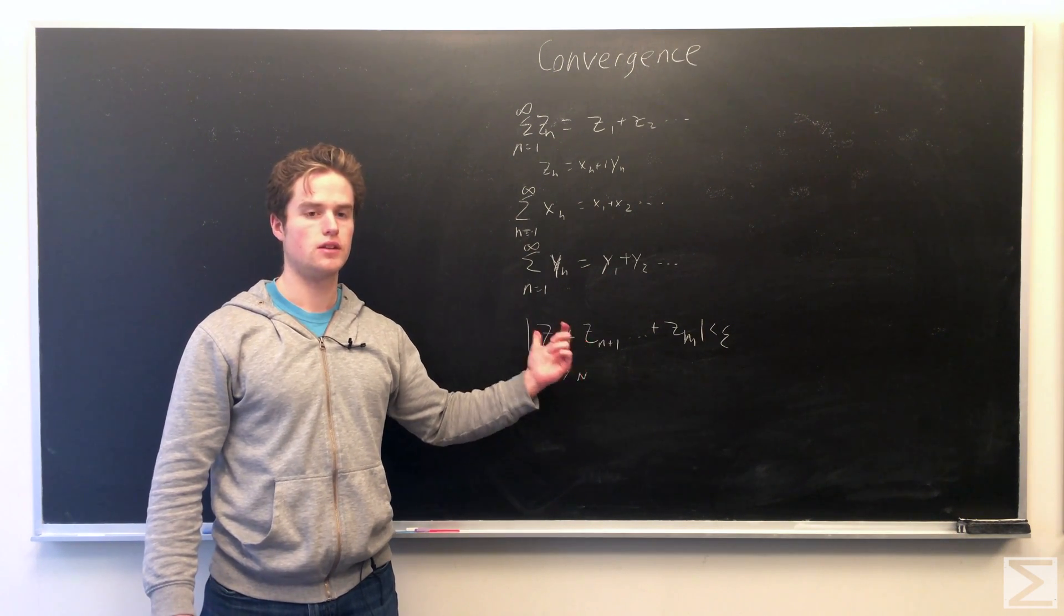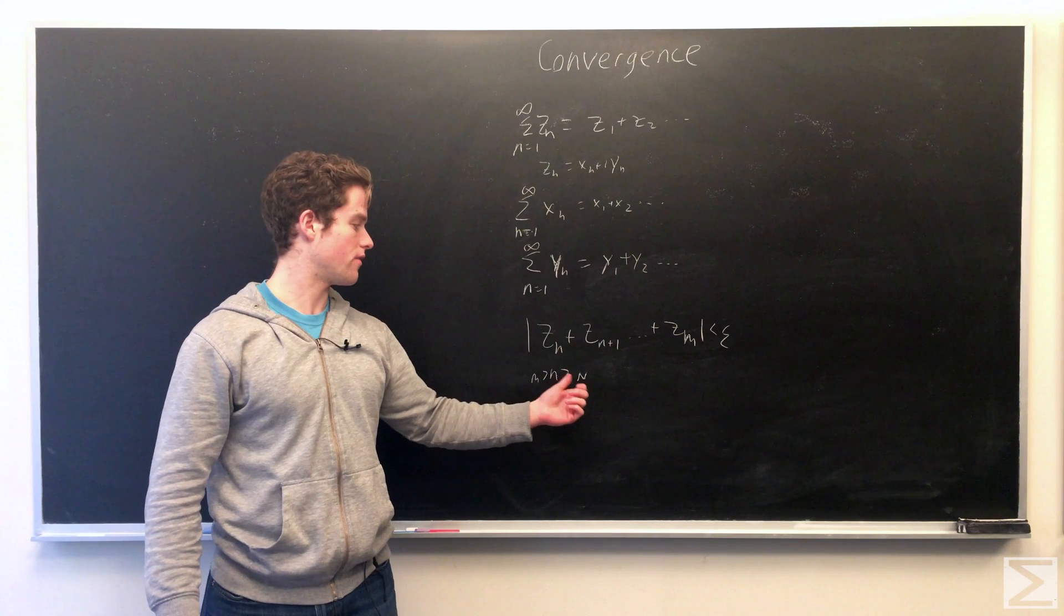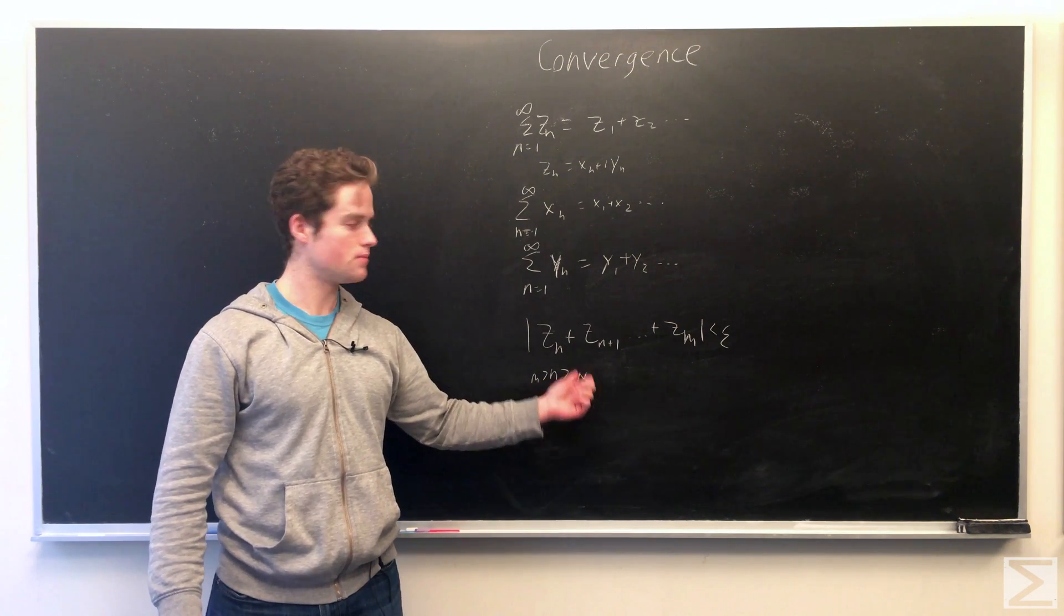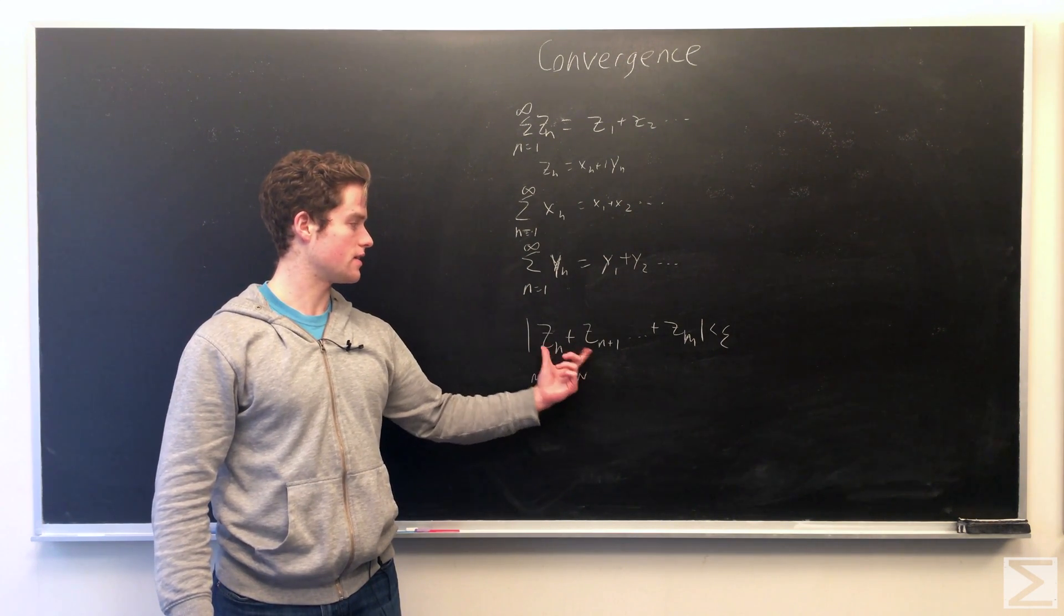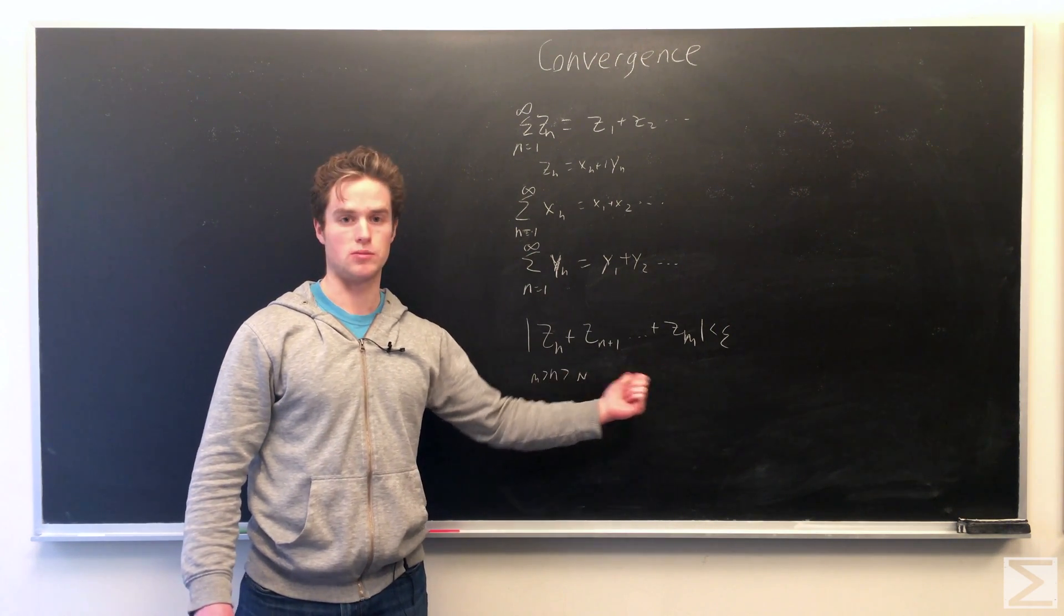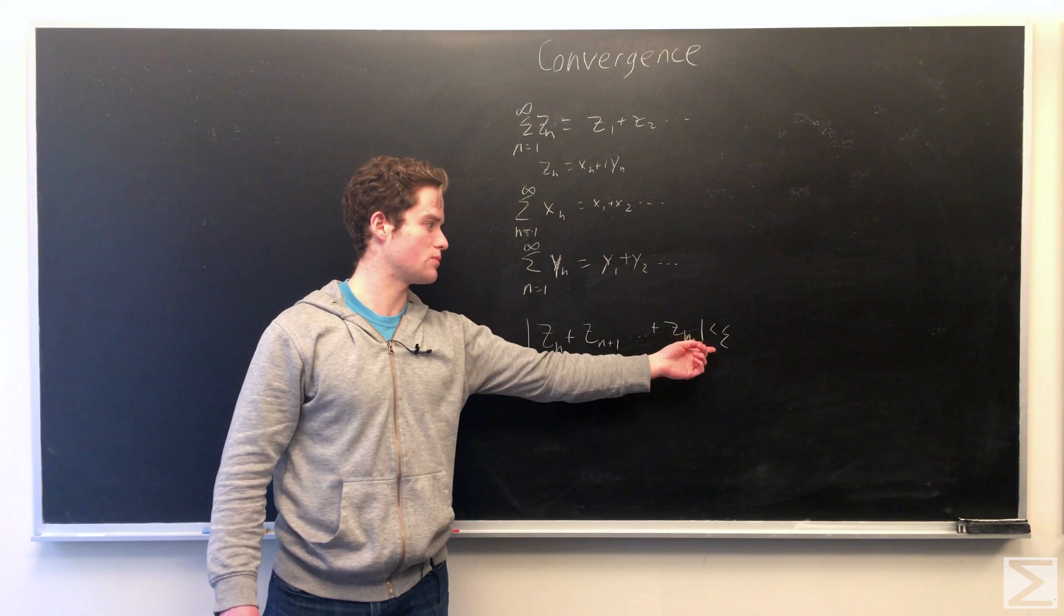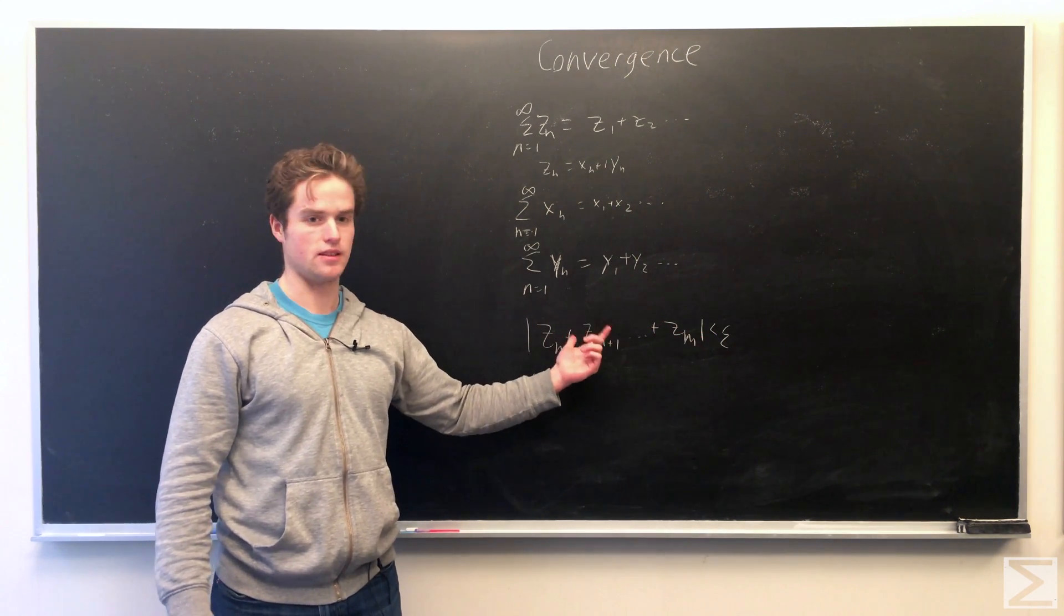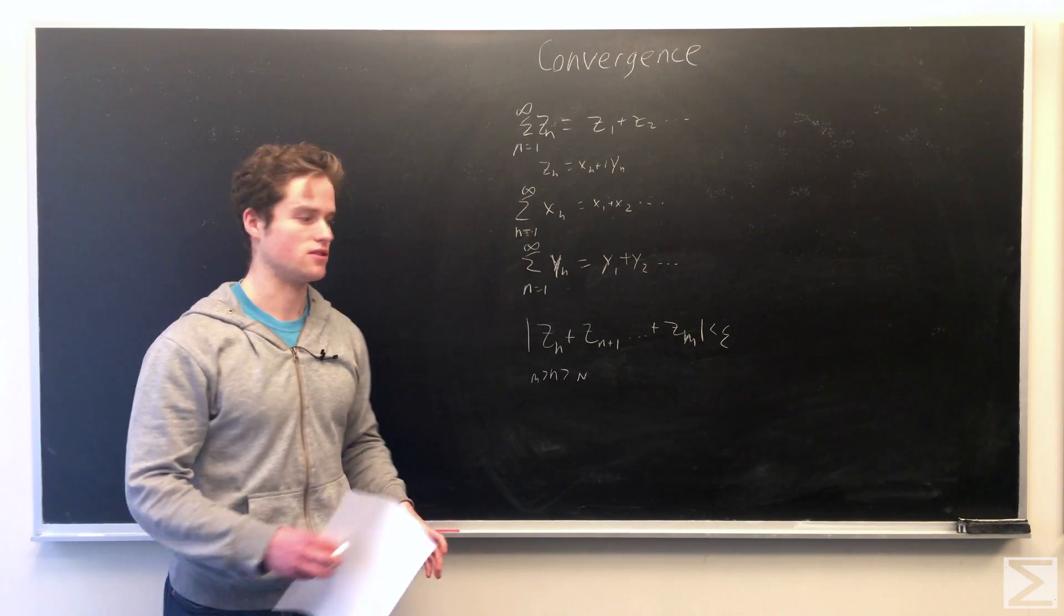Cauchy's criteria is: for some big N, if we have M and N both bigger, M bigger than N, bigger than big N, then no matter the M and N, this sum zn plus zn plus 1 to zm will always be less than epsilon. So we can take M as far as we want, this will always be less than epsilon. And this is a necessary and sufficient condition for the convergence of a complex series.